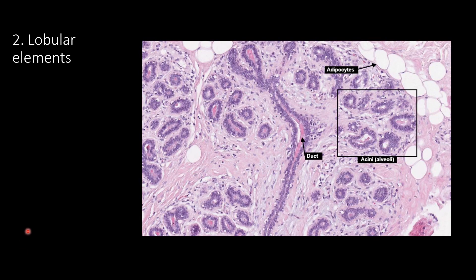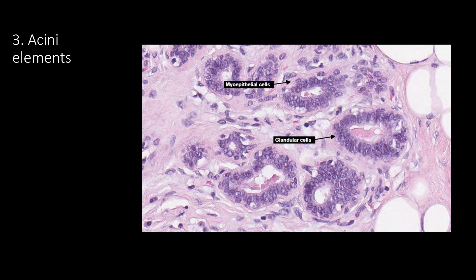Zooming in on one of those lobules, we can see the lobular elements — some adipose tissue, the duct, and more clearly the acini. Taking a closer look at the acini, we can see glandular epithelial cells secreting pink proteinaceous material into their lumen, and myoepithelial cells forming a thin pink line lining the gland and helping to push out that proteinaceous material.